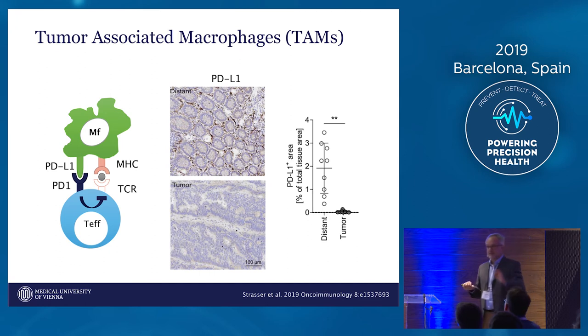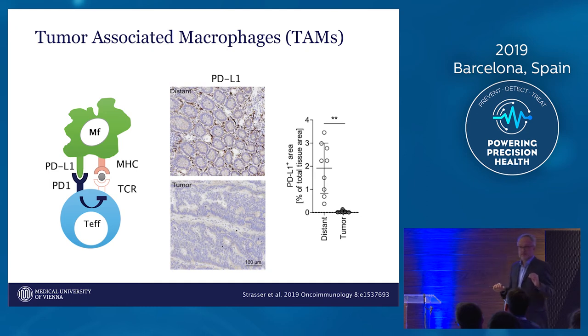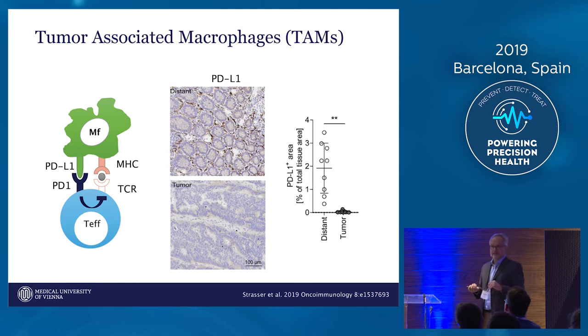This may also be the reason why checkpoint inhibitors are not working in colorectal cancer. There is only a very small subgroup of patients — the MSI-positive patients — which profit from checkpoint inhibitors. All other 85% of patients have no effect.